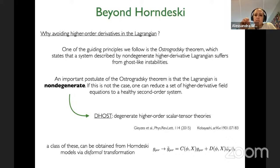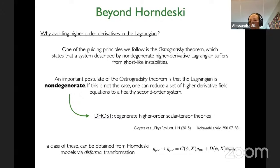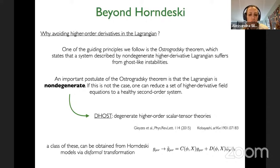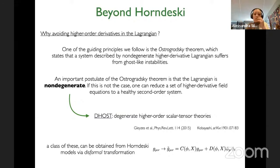A class of these so-called beyond Hordesky theories can be obtained through a formal transformation out of Hordesky models. This involves performing a transformation of your metric as a function of the scalar field — a conformal transformation. If additionally you perform a transformation with a coefficient that is a function of the scalar field and the kinetic term, and introduce a combination depending on the derivative of the scalar field — known as the disformal transformation — it can take you out of Hordesky into a set of theories that still have second-order equations of motion but are richer in terms of operators appearing in the action.